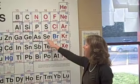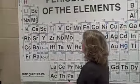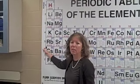All these elements here want to gain electrons to be isoelectronic with the noble gas, and all these elements here want to lose electrons to be isoelectronic with the noble gas.